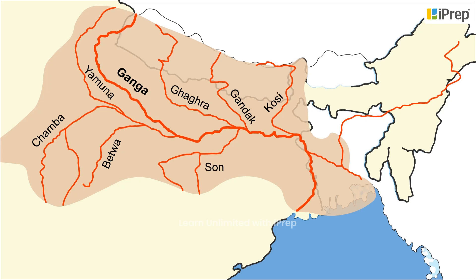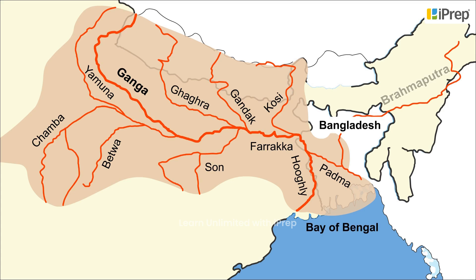Joined by these tributaries, the Ganga flows eastwards till Farakka, West Bengal, where it bifurcates into Hooghly and Padma. Hooghly flows southwards and drains into the Bay of Bengal. Padma flows into Bangladesh, where it is joined by the Brahmaputra, and eventually drains into the Bay of Bengal.